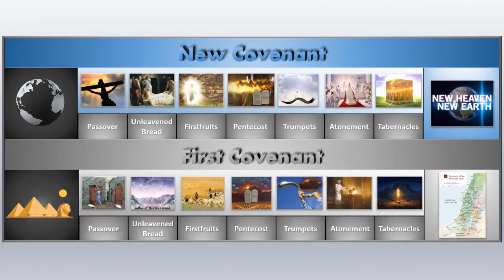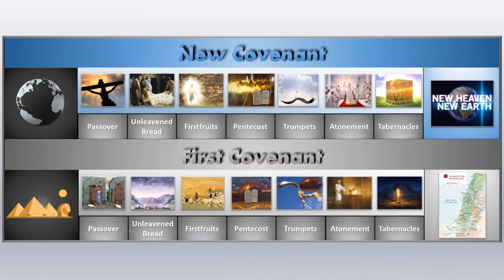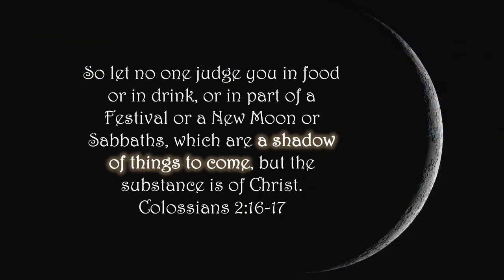Additionally, since Passover, Unleavened Bread, Firstfruits, Pentecost, Trumpets, Atonement, and Tabernacles all have deep permanent connections with the Exodus, as we celebrate those holy festivals we remember that we're on a metaphorically similar journey through the wilderness of this present world, and one day if we faithfully follow the leading of the Holy Spirit as they followed the pillar of cloud and fire, we will reach the true promised land and cross over the Jordan into the kingdom of God. Truly, the First Covenant and the New Covenant fit together like a hand in a glove, and those who discard either one can never properly understand the other.